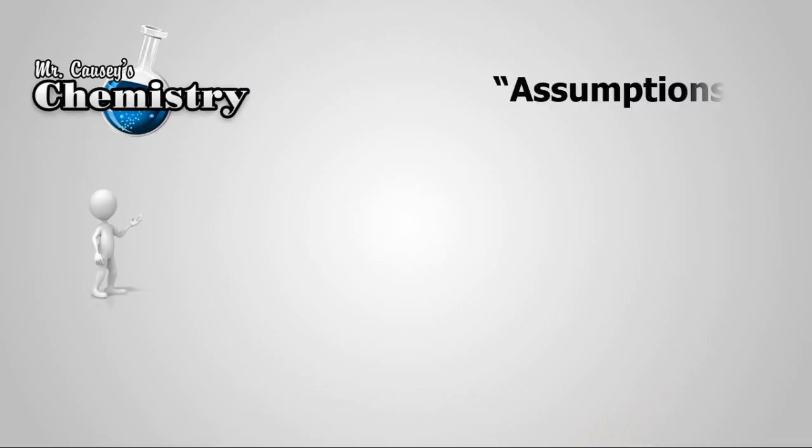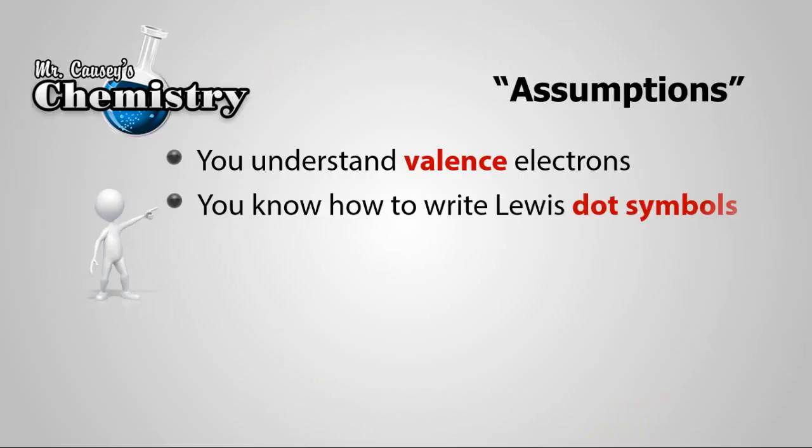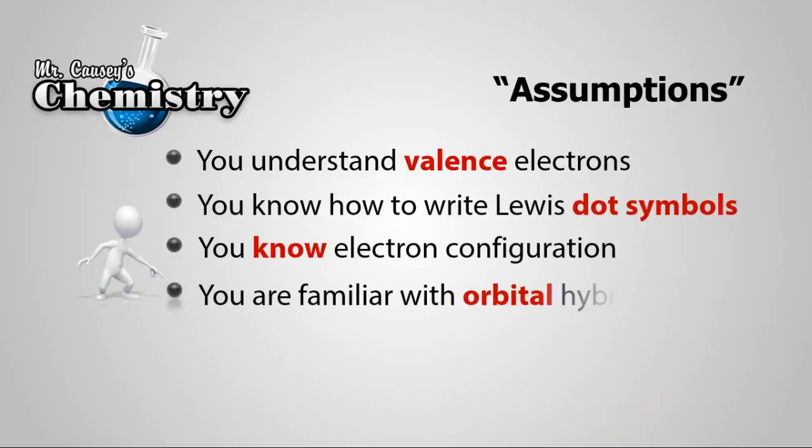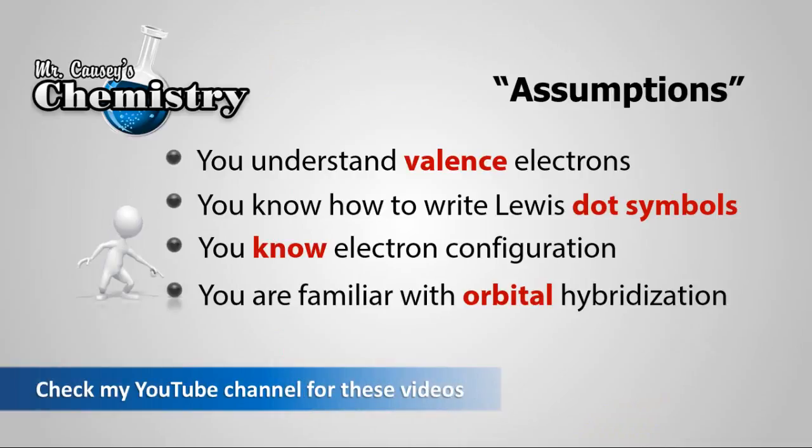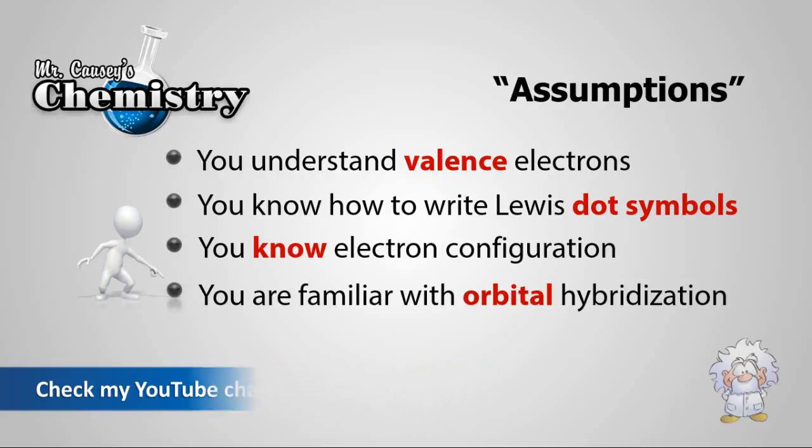There's some assumptions I'm going to make. I'm going to assume you understand valence electrons, that you know how to write Lewis dot symbols, you know electron configuration and you are familiar with orbital hybridization. And if you're not sure about any of these, be sure to go to my YouTube channel and find those videos.